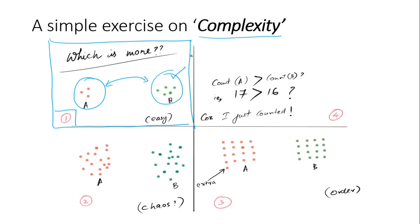But when it comes to this case where the number of dots are more and they're scattered, it's not very easy for us to tell whether group A or group B contains more dots. We really have to count in order to say that.